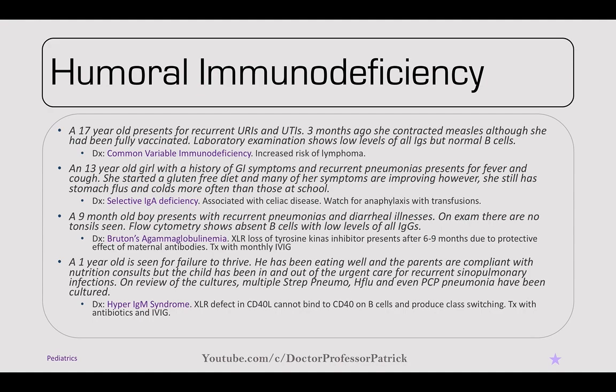Moving into immunodeficiencies, a 17-year-old presents with recurrent URIs and UTIs. Three months ago she contracted measles, although she had been fully vaccinated. Laboratory exams show low levels of all IgGs but normal B cells — this is common variable immunodeficiency. It increases the risk of lymphoma and typically presents in the teens to young adult period with common infections and infections to which the patient was previously immune.